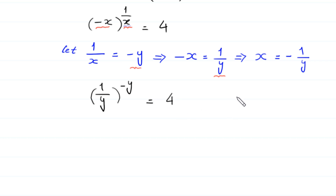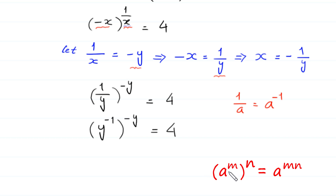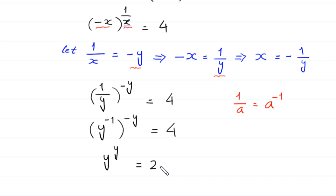According to the property of exponents, 1 over a is equal to a to the power negative 1. So 1 over y is equal to y to the power negative 1, whole to the power negative y, is equal to 4. Now applying the exponent property a to the power m whole to the power n equals a to the power m times n: this power negative 1 will be multiplied by this power negative y, giving y to the power positive y is equal to 4, and we can write 4 as 2 to the power 2.